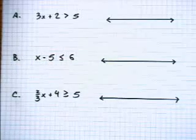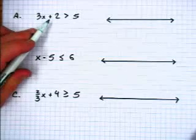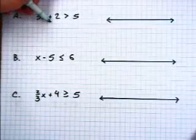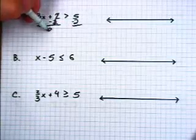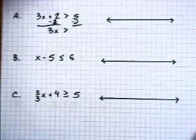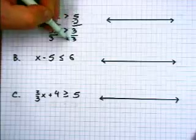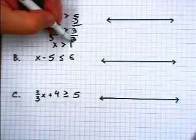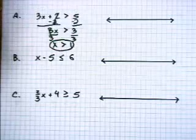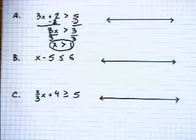So in order to isolate the x to get it alone, we have to subtract 2 from both sides. That leaves us with 3x is greater than 3. Divide both sides by 3. x is greater than 1. And you notice we keep the equal sign lined up, the greater than sign lined up just like we would an equal sign.